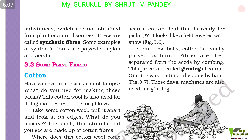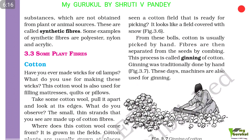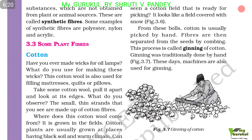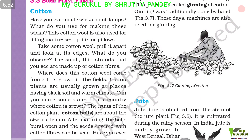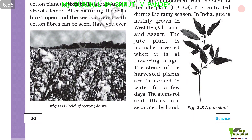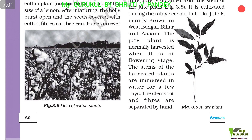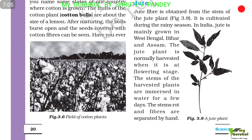Cotton is a plant fiber. Have you ever made wicks for oil lamps? Cotton wool is used for making wicks, and is also used for filling mattresses, quilts, and pillows. If you pull apart some cotton wool and look at its edges, the small thin strands you see are made up of cotton fibers. Cotton grows in the fields — cotton plants are usually grown at places having black soil and warm climate. The fruits of the cotton plant, called cotton bolls, are about the size of a lemon. After maturing, the bolls burst open and the seeds covered with cotton fibers can be seen. A cotton field ready for picking looks like a field covered with snow.